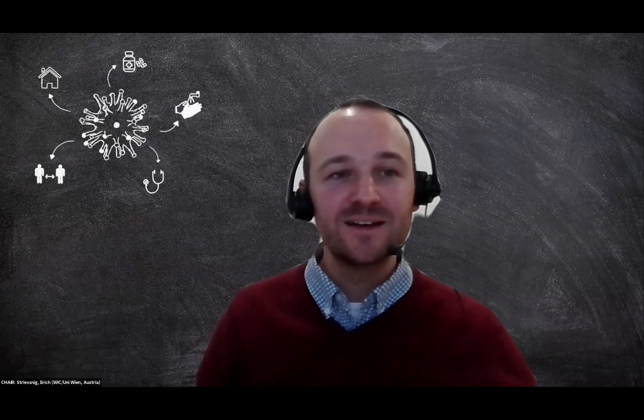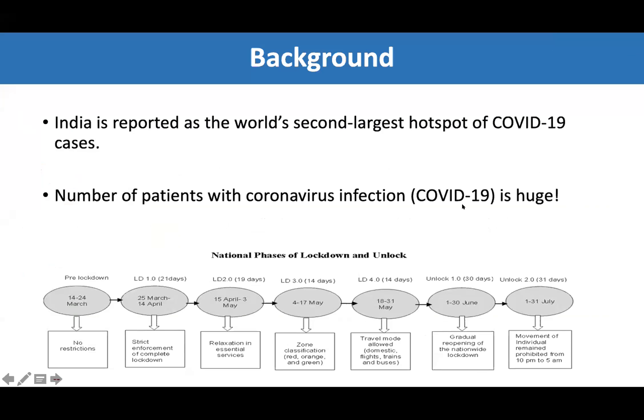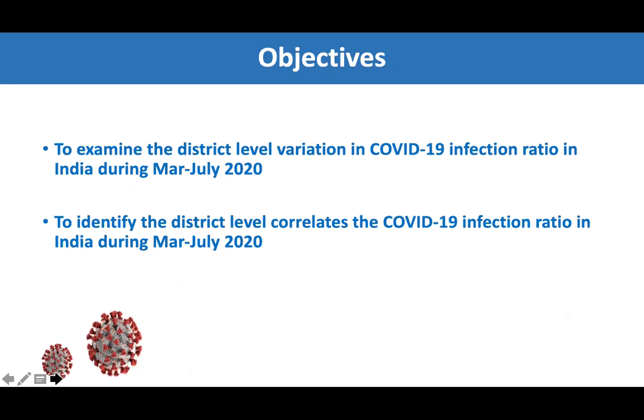India is reported as the world's second largest hotspot of COVID-19 cases. The number of patients is very large — beyond what the government had expected — and it led to a complete national-level lockdown, followed by a phase-wise reopening of the country. Our objective in this study is to examine the district-level variation in COVID-19 infection ratio in India during March to July 2020, and to identify the district-level correlates of COVID-19 infection ratio for the same period.